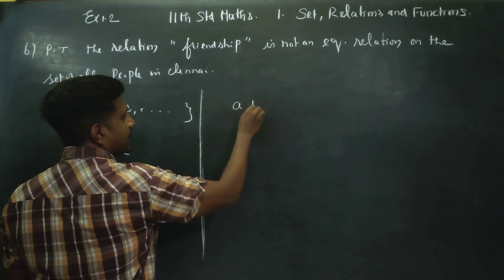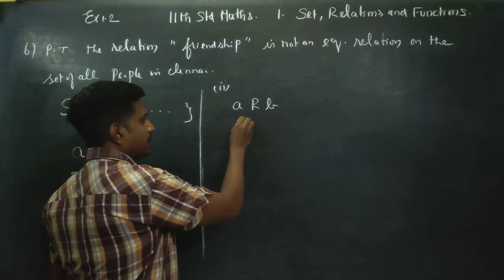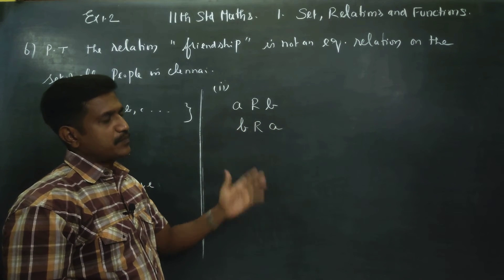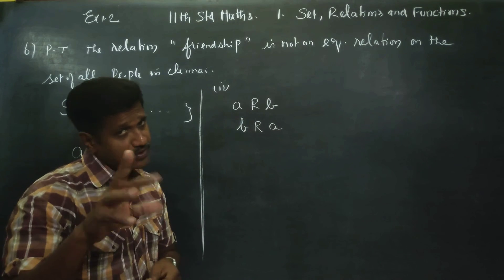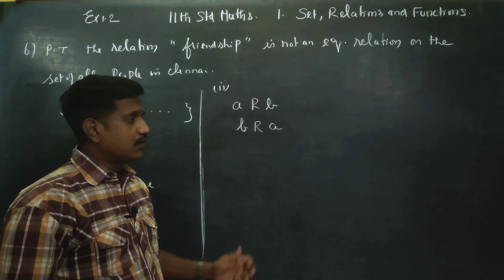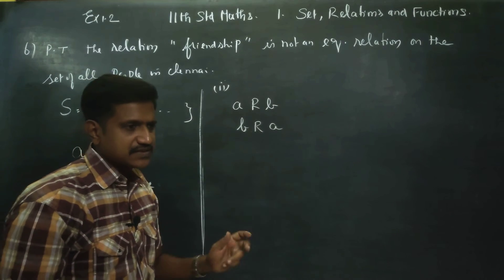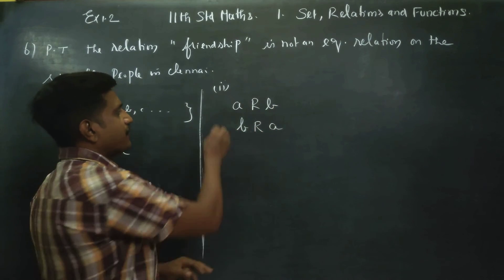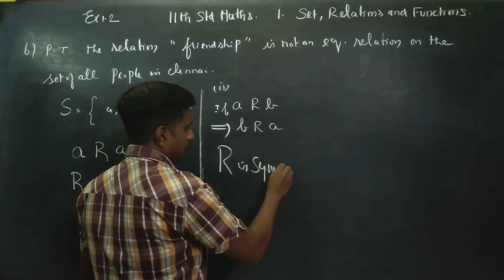Next, check symmetric. If A is a friend of B, then B is also a friend of A — if you are a friend of mine, I am a friend of yours. This holds in general: if you are a friend of mine, I am a friend of yours. Therefore, R is symmetric.